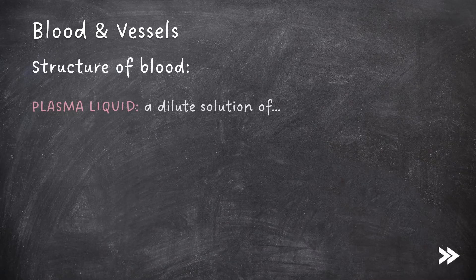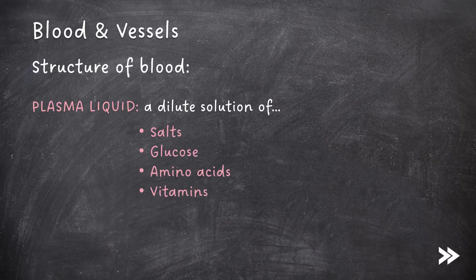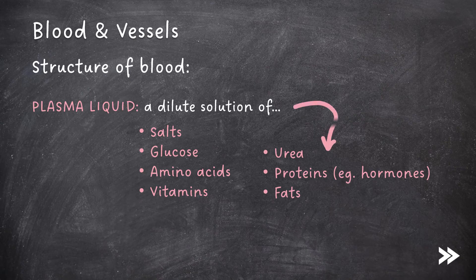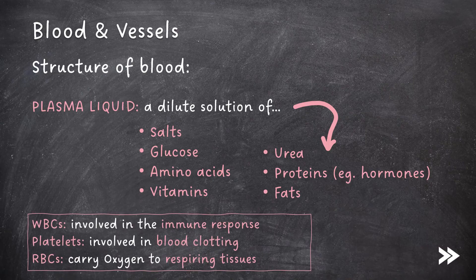Blood is made up of plasma liquid, which is a dilute solution of substances such as salts, glucose, amino acids, vitamins, urea, proteins and fats. Blood also contains white blood cells, which are involved in the immune response. Platelets are involved in blood clotting, and red blood cells transport oxygen to respiring tissues.